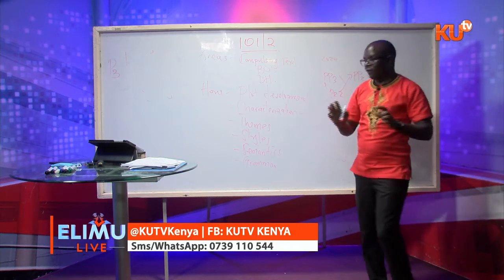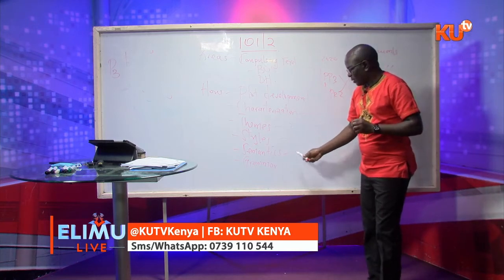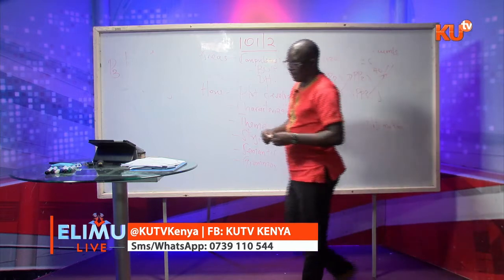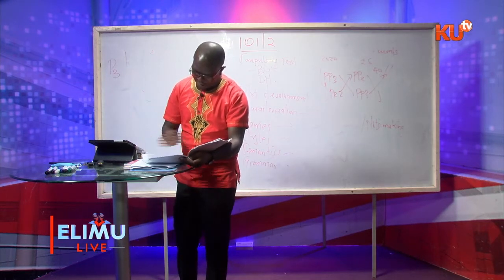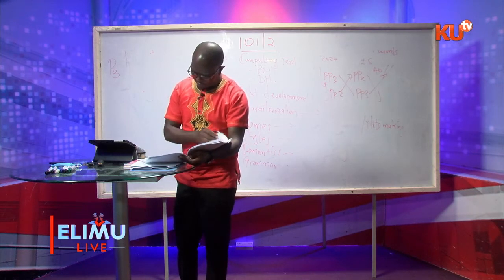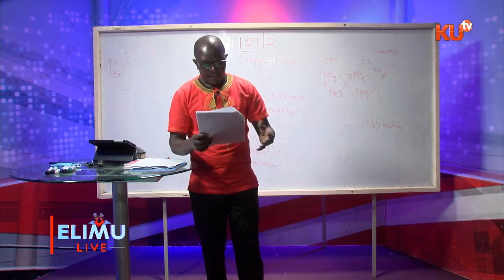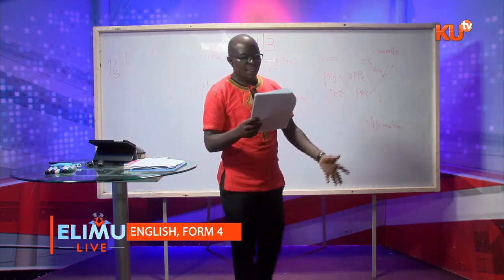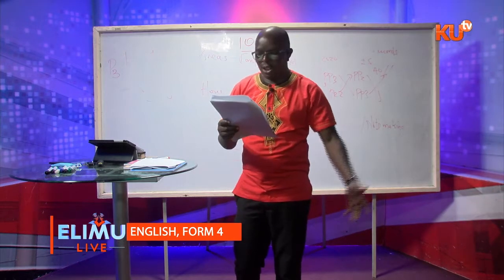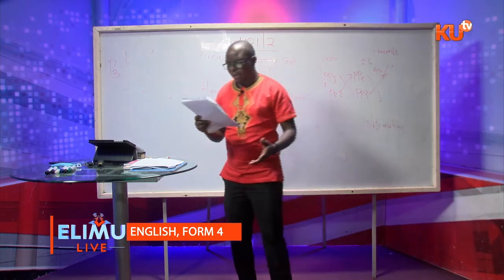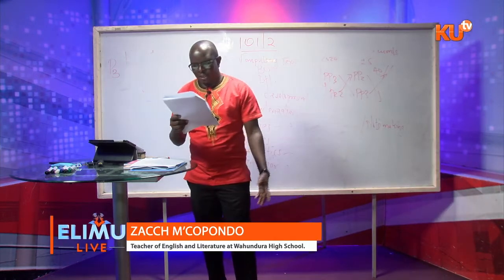Every time you read an extract, note the following: plot development, characterization — which characters are involved, which themes are there, which styles are there, meaning of given words, and then grammar. KCC 2019 had an extract from A Doll's House beginning with children saying: 'Mother, the stranger has gone out through the gate.' Nora says: 'Yes, dears, I know. But don't tell anyone about the stranger. Do you hear? Not even papa.' Children: 'No, mother. But will you come and play again?' Nora: 'No, not now. But mother, you promised us. I can't now. Run away in. I have such a lot to do. Run away in, my sweet little darlings.'